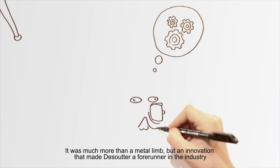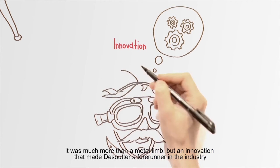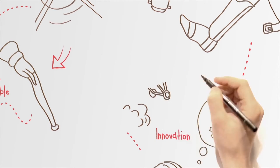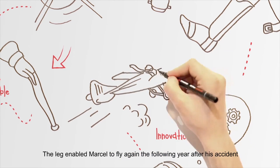It was much more than a metal limb, but an innovation that made Desuiters a forerunner in the industry. The leg enabled Marcel to fly again the following year after his accident.